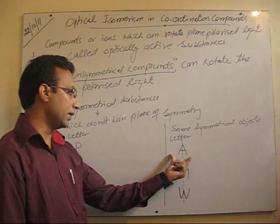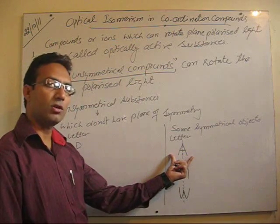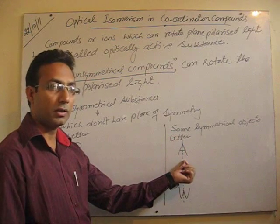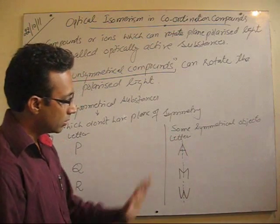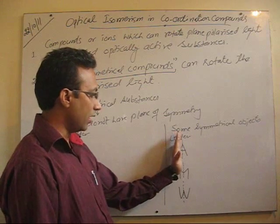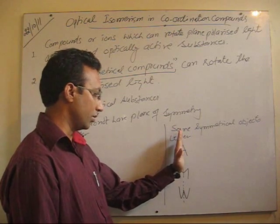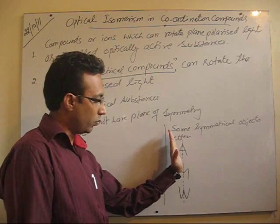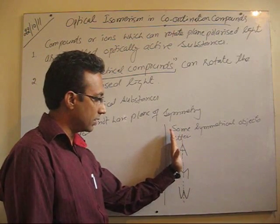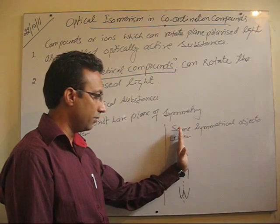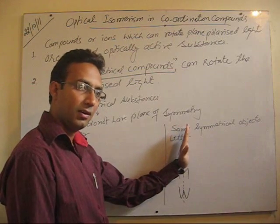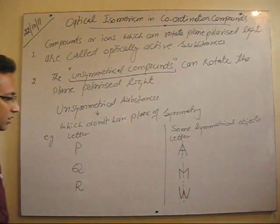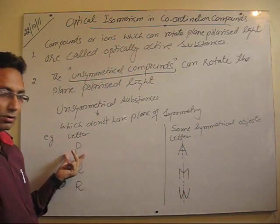If such compounds have a plane of symmetry, then they cannot rotate plane polarized light. Why? Because when light passes through one half, there will be rotation — suppose it is rotated by two degrees left. But when the plane polarized light passes through the other half, it rotates two degrees right. So the net rotation will be zero. But in unsymmetrical cases, there will be a net rotation.